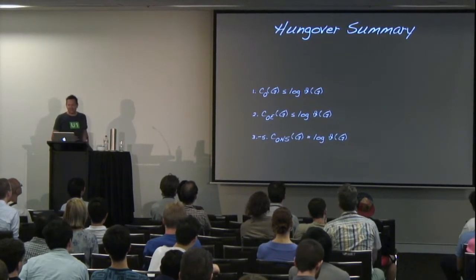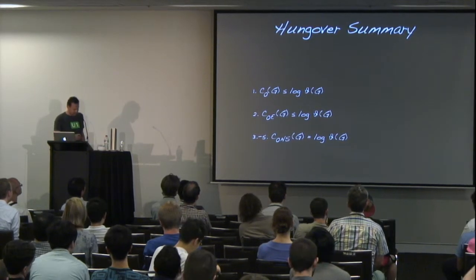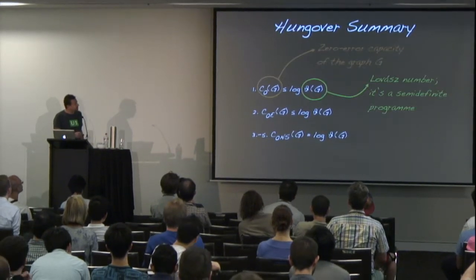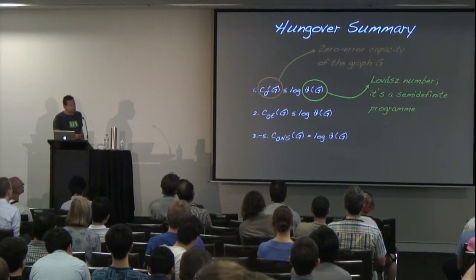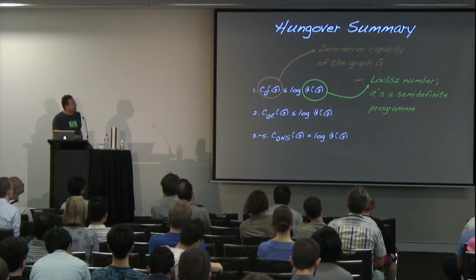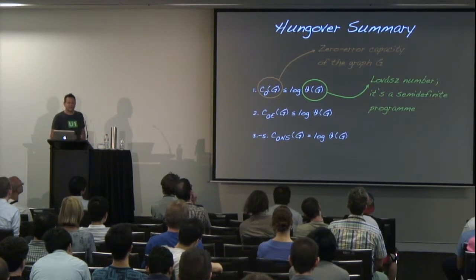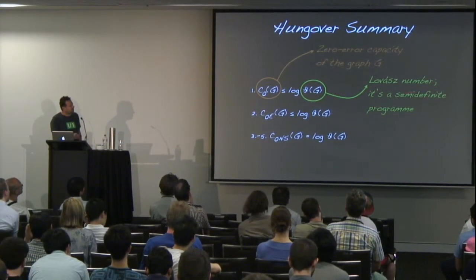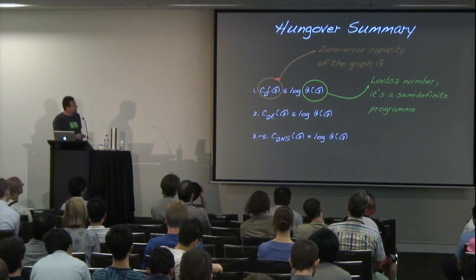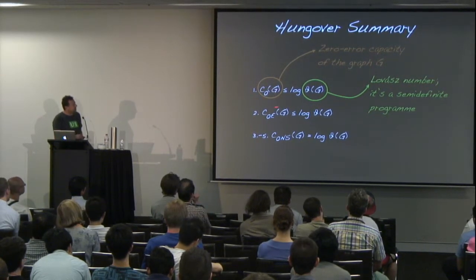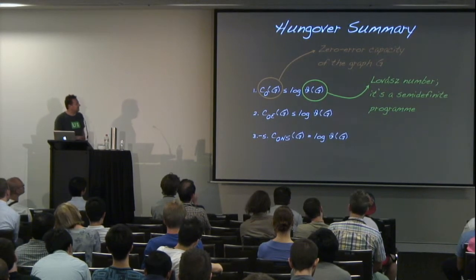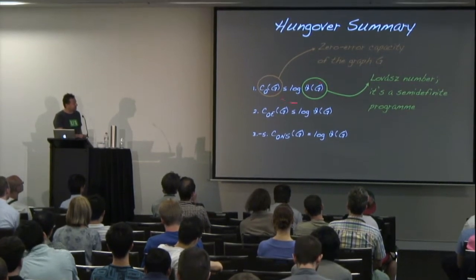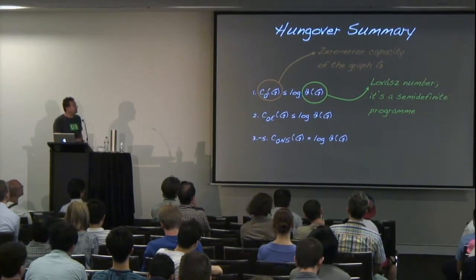These are essentially the main points and also a guide to the structure of the talk, which has five parts. In the first two, I will remind you of fundamental notions on graphs, zero-error capacity, and the Lovász number — a classic graph parameter that is semidefinite. We will show that the zero-error capacity and the entanglement-assisted zero-error capacity are upper bounded by this Lovász number.